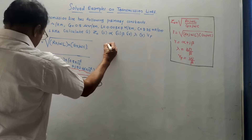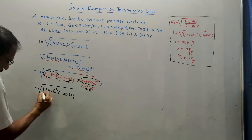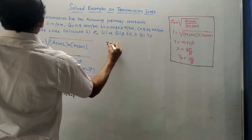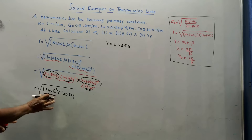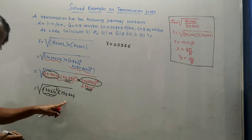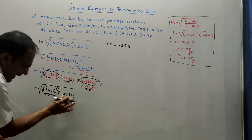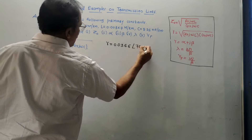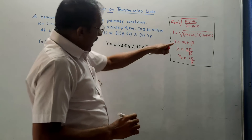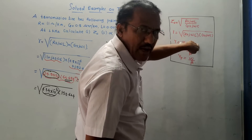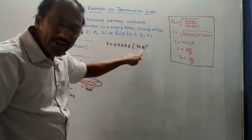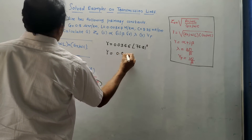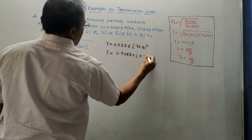Now take the square root. Take the square root of the magnitude: √(1.34 × 10⁻³) = 0.0366. For the angle, square root means divide by 2: 153.624° / 2 = 76.81°. So gamma = 0.0366 at angle 76.81°. Convert this polar form to rectangular form: 0.0083 + j·0.3563.